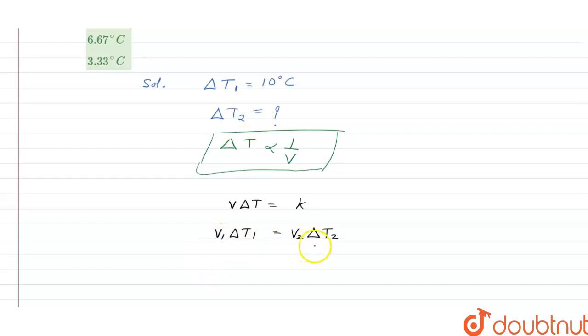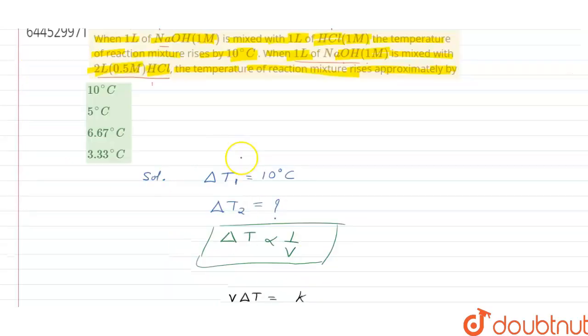Let's put the values here. Delta T1 is 10, V1 is 2, then V2 is 3. How we have calculated V2 and V1: initially there was 1 liter and 1 liter, so total volume for the V1 case is 2 liters.